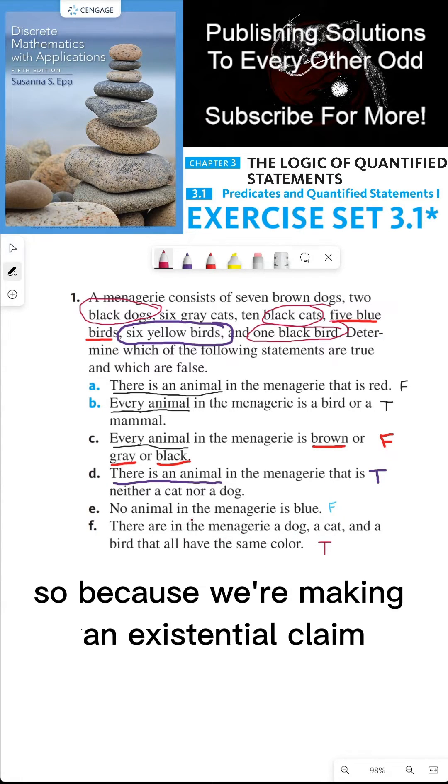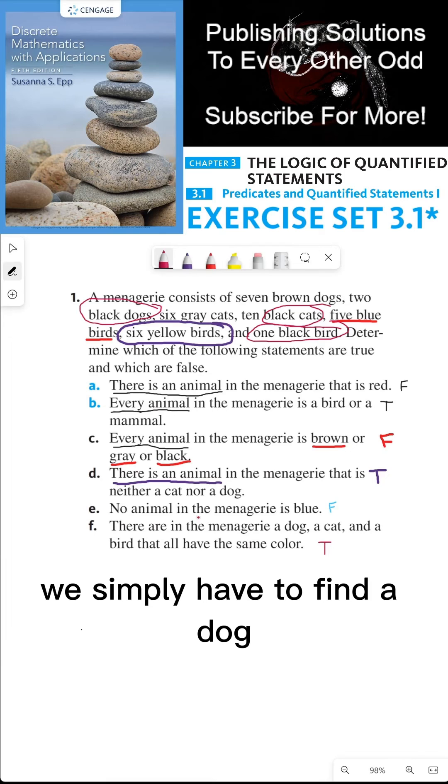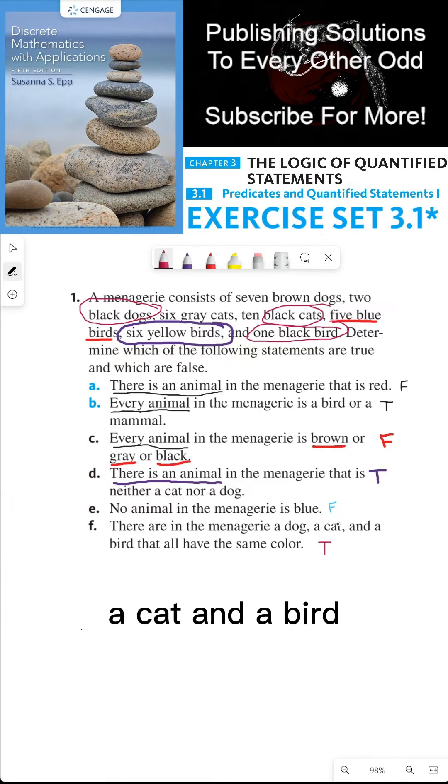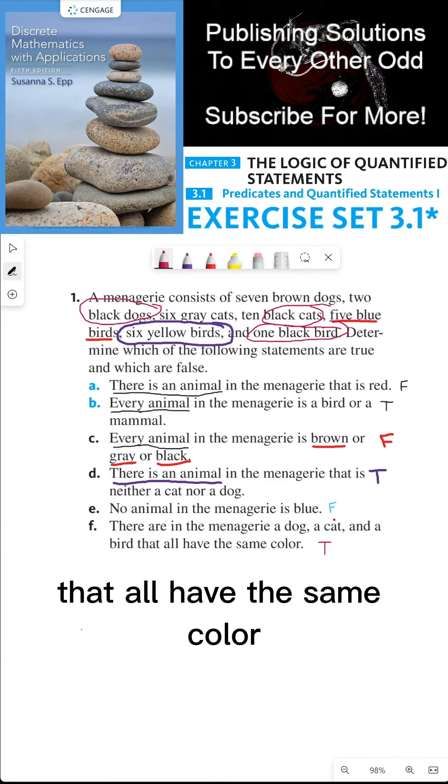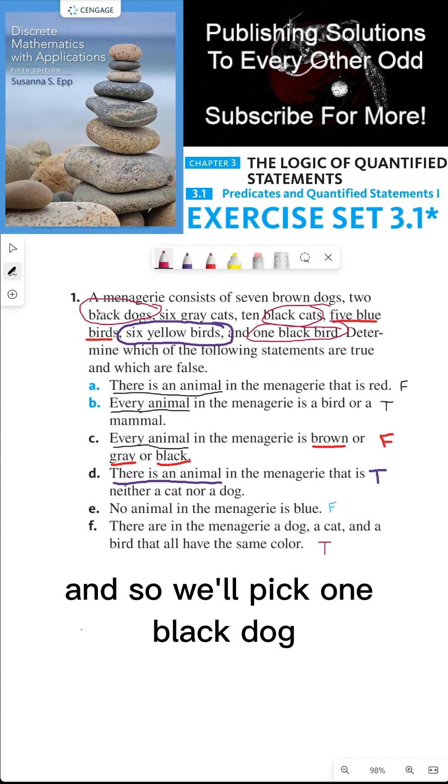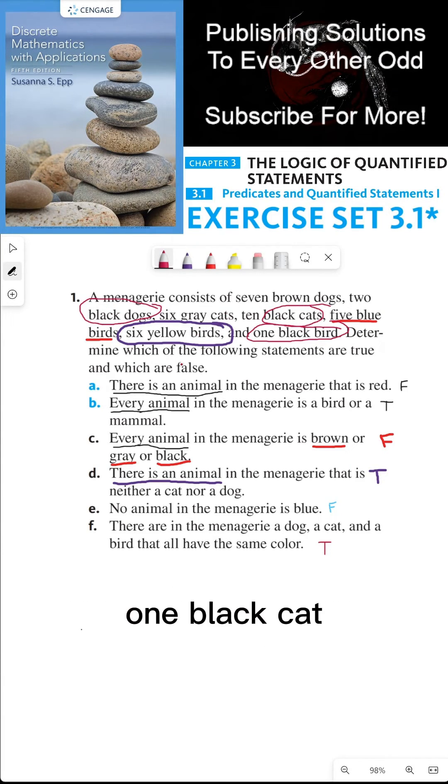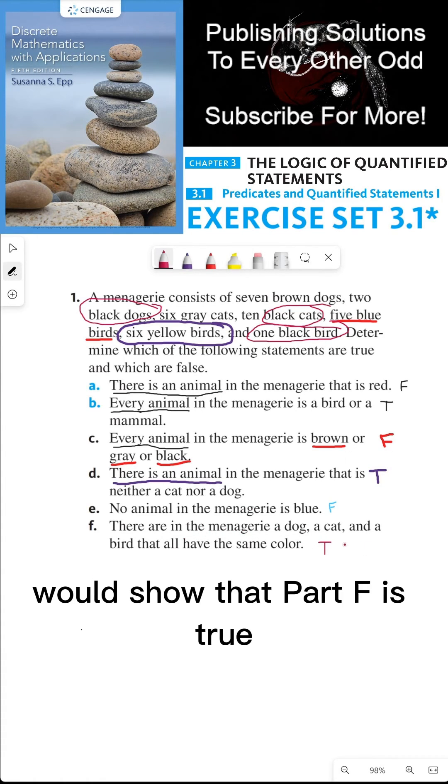Because we're making an existential claim, we simply have to find a dog, a cat, and a bird that all have the same color. So we'll pick one black dog, one black cat, and one black bird. That specific example shows that part F is true. Thanks everyone, and I'll see you in the next video.